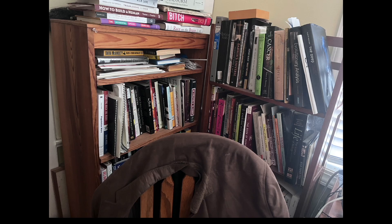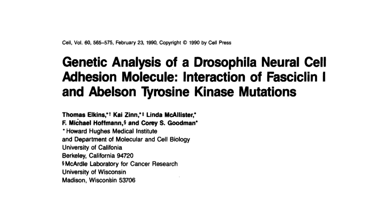Today I want to talk about one of my favorite papers, this one. It's titled Genetic Analysis of a Drosophila Neural Cell Adhesion Molecule: Interaction of Fasciclin-1 and Abelson Tyrosine Kinase Mutations, by Thomas Elkins, Kai Zinn, Linda McAllister, Michael Hoffman, and Corey Goodman.